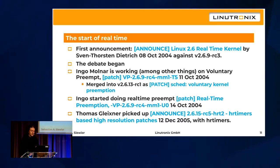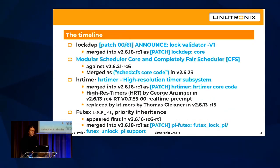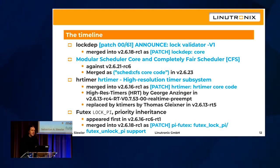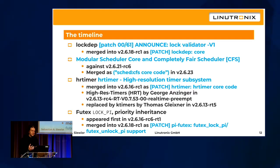Feature-wise, the lockup validator was one early requirement. Thomas and Ingo argued because Thomas's kernel was working but Ingo's wasn't — they had different hardware. This led over time to the lockup validator Steven explained today. It was never in the RT patch first; it was one of those upstream-first approaches.